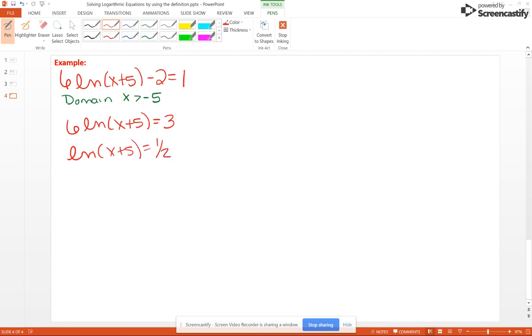The base of the natural log function is e. So e to the 1 half equals x plus 5. So x is e to the 1 half minus 5. And when you put that into your calculator, you get negative 3.3513.